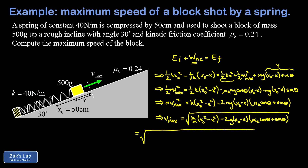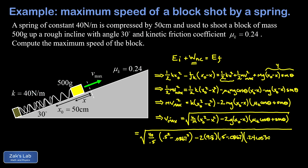Substituting the numbers into the square root: k = 40, m = 0.5 kg, x₀ = 0.5 m, x = 0.0867 m, g = 9.8, μ_k = 0.24, θ = 30°. The expression becomes √[ (40/0.5)(0.5² − 0.0867²) − 2(9.8)(0.5 − 0.0867)(0.24·cos30° + sin30°) ]. Running the numbers to three significant digits gives about 3.70 meters per second. If we had naively used the equilibrium position instead, we would have gotten a speed somewhat less than this, because after position x the mass is already slowing down.